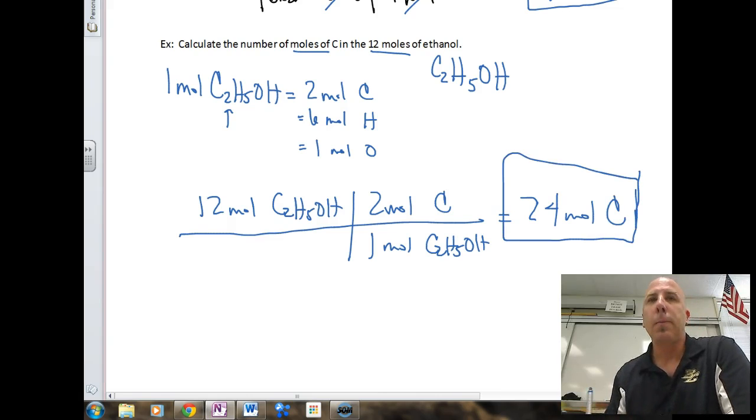We can say that if we have 12 moles of C2H5OH, that means in one mole of C2H5OH ethanol, we have two moles of just carbon by itself. And so we just have to double it. And so it's 24 moles of carbon within that compound. If we wanted to know the number of moles of oxygen in 12 moles of ethanol, it would be easy. It would just be 12 times 1 over 1. See how that works?